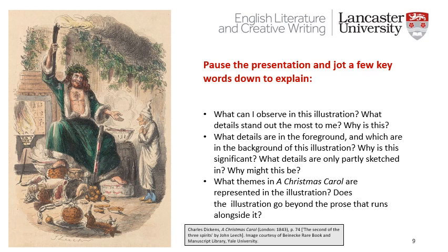Thinking about how the illustrations help us to understand themes in the novella, I would like you to examine the illustration on the left-hand side of this slide. Jot down a few key words to explain: what can I observe in this illustration? What details stand out the most to me? Why is this? What details are in the foreground and which are in the background? Why is this significant? What details are only partly sketched in and why might this be? And lastly, what themes in A Christmas Carol are represented in the illustration? Does the illustration go beyond the prose that runs alongside it? I'm looking for key words or a short bullet-pointed list of your answers. Take some time now to work on this task and pause the presentation whilst you do so.